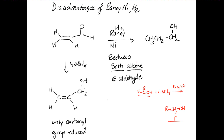There are advantages and disadvantages of Raney nickel versus the hydride reagents, and this relates to the selectivity of reduction. So far, we haven't dealt much with multiple functional groups in one molecule, but in real synthesis you might have three, four, five, or six different functional groups. You have to be careful that what you're doing to one group isn't reacting with the others.